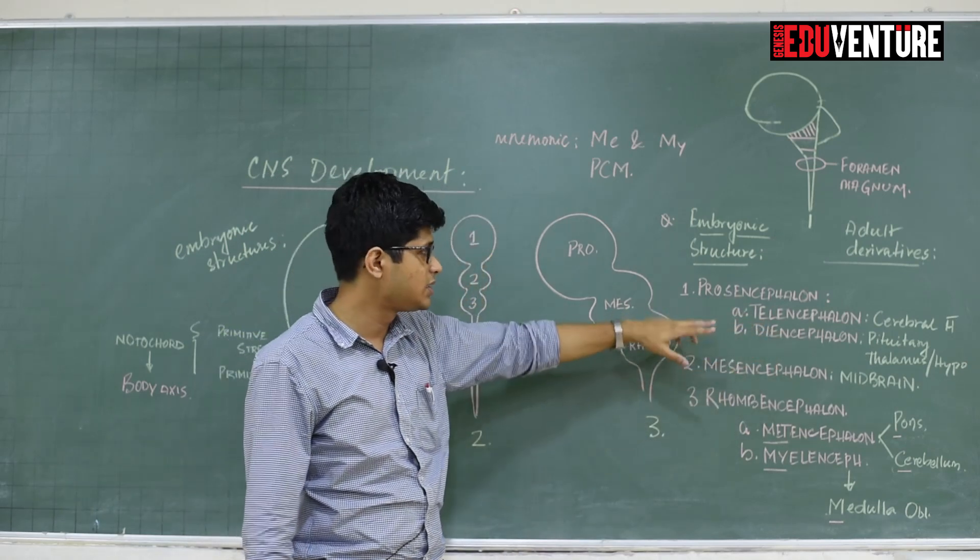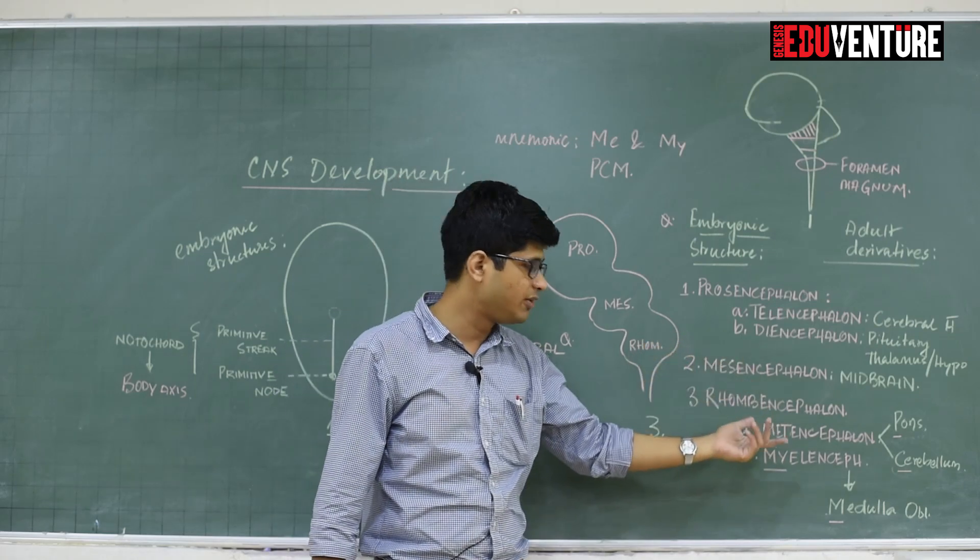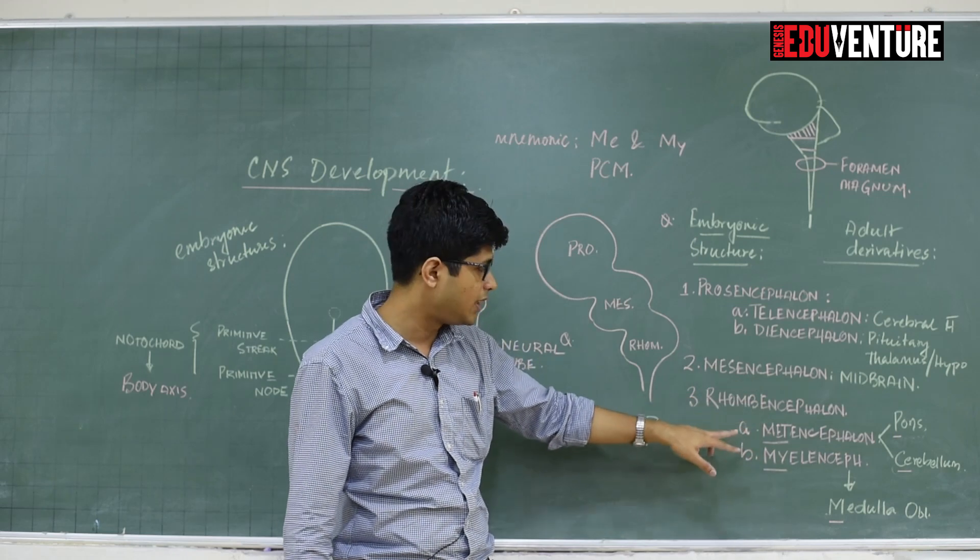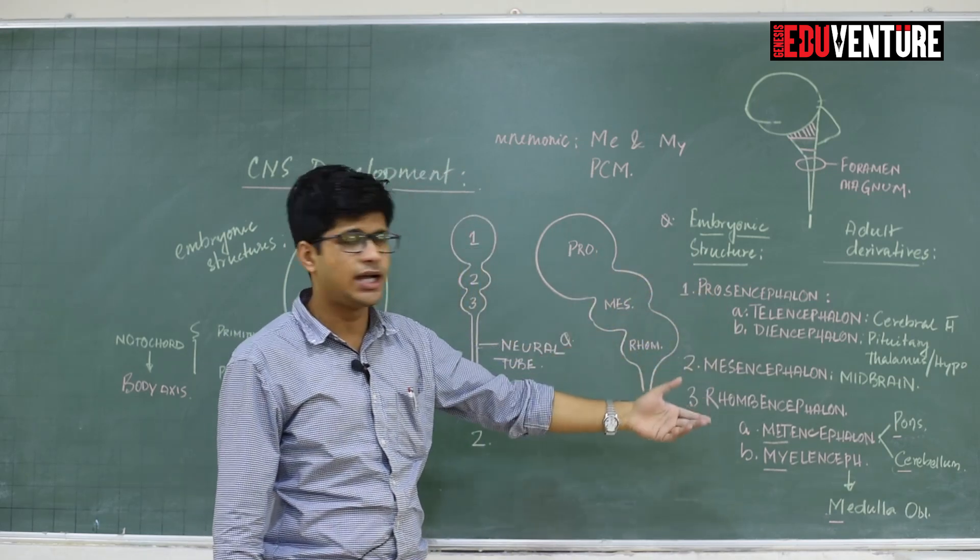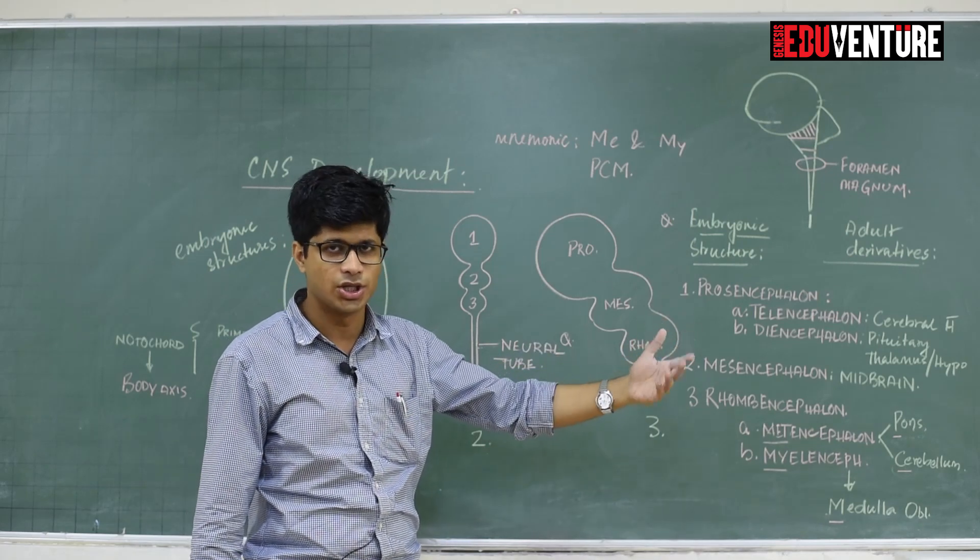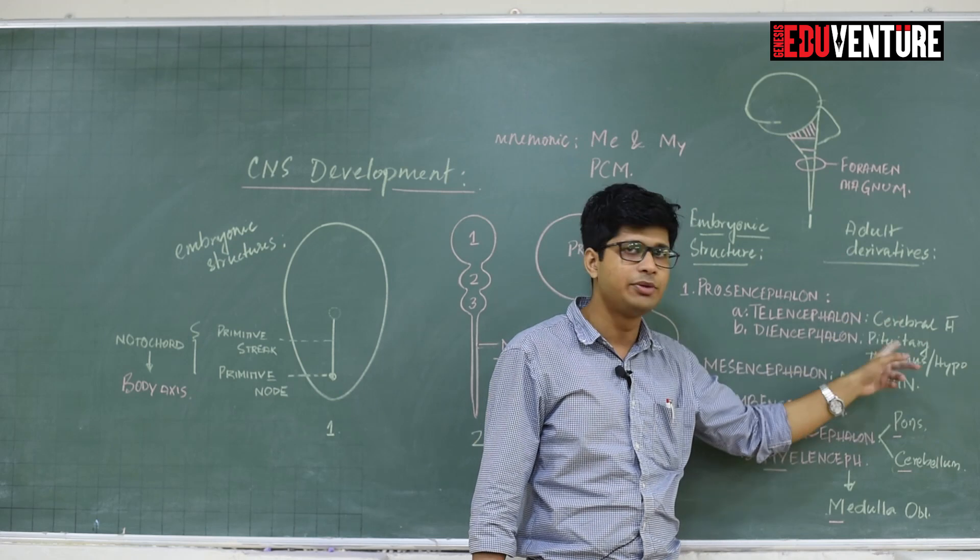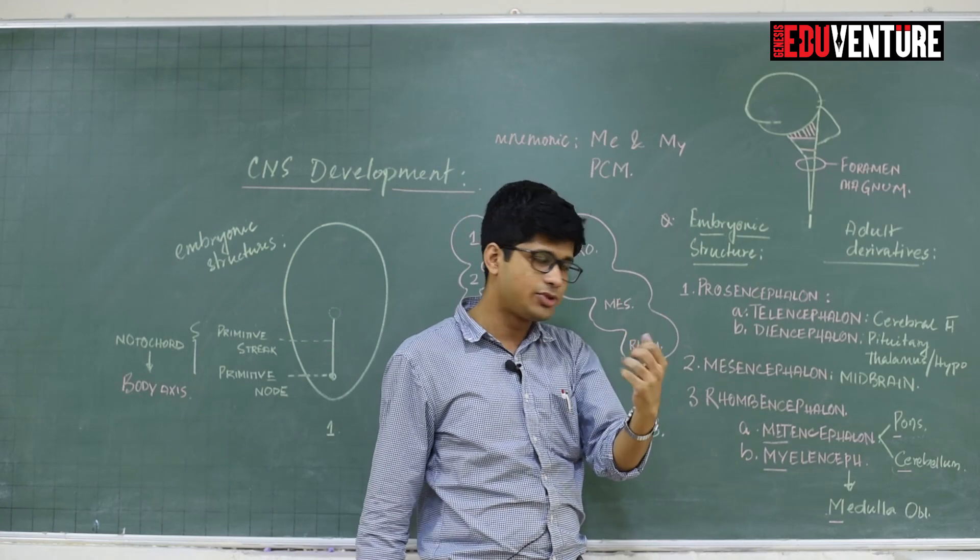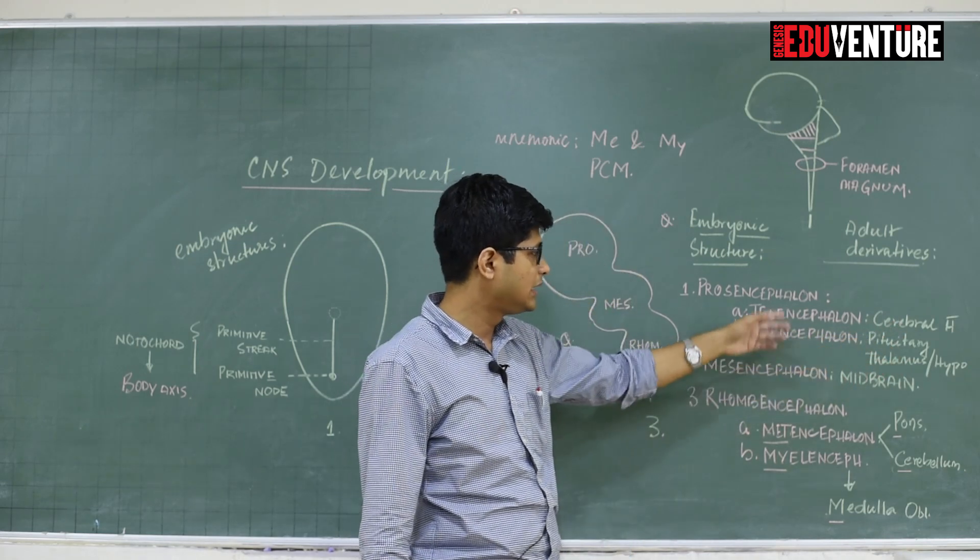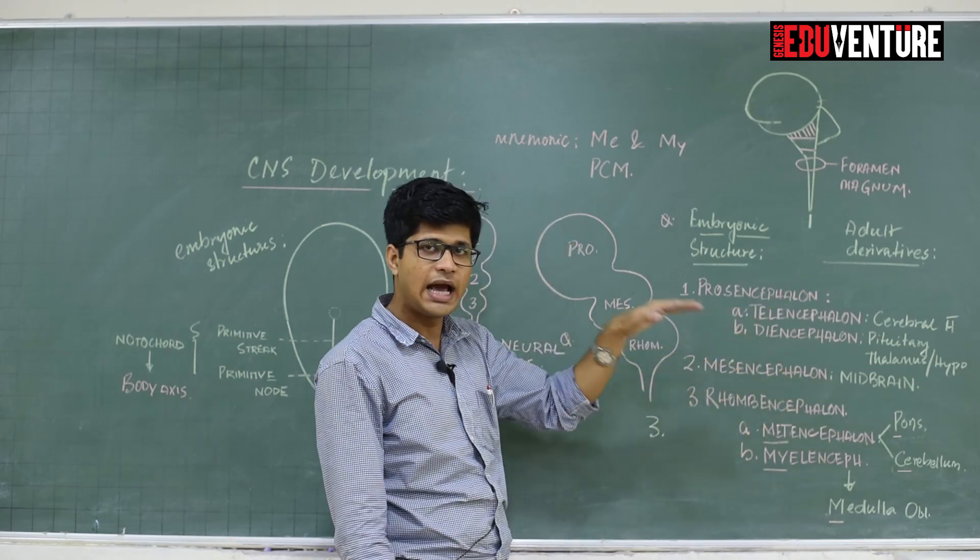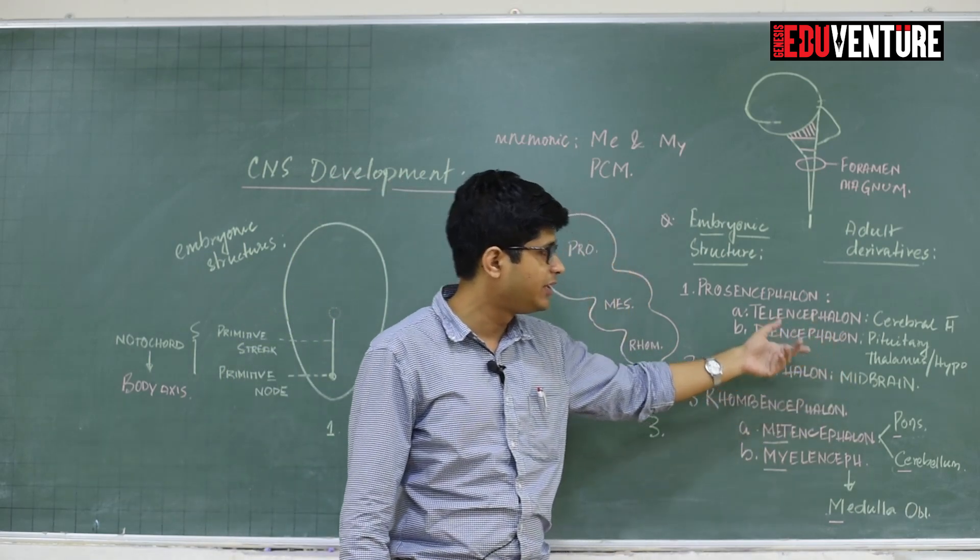Starting with the prosencephalon, it has got two parts: one is the telencephalon and one is the diencephalon, not shown in this diagram. The second one is the mesencephalon, and then comes the rhombencephalon which has again got two parts, the metencephalon and the myelencephalon. Prosencephalon means the forward structure, so it will give rise to the cerebral hemispheres, the anterior most structures. Telencephalon will give rise to the cerebral hemispheres. The next part is the diencephalon, which lies just beneath the telencephalon. Diencephalon will give rise to the pituitary, thalamus, and hypothalamus.